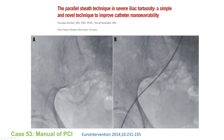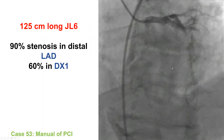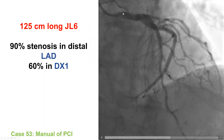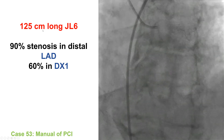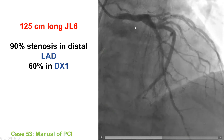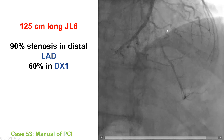This is the parallel sheath technique from Nicolaus Reifart. With extreme tortuosity of the iliac arteries, a second access is obtained in the same artery, and a second catheter and sheath is advanced that straightens the iliac artery and facilitates subsequent equipment advancement. Using a 125 cm long JL-6 catheter, we were able to engage the left main.